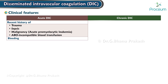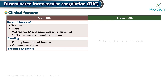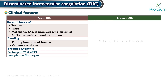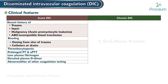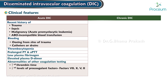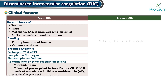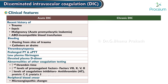Findings in acute DIC include bleeding especially oozing from sites of trauma, catheters or drains, thrombocytopenia, prolonged PT and APTT, low plasma fibrinogen, elevated plasma D-dimers, and abnormalities of other coagulation testing like increased thrombin time, reduced levels of procoagulant factors such as factors 7, 10, 5, and 2, reduced levels of coagulation inhibitors such as antithrombin, protein C, and protein S, and microangiopathic changes on peripheral blood smear.